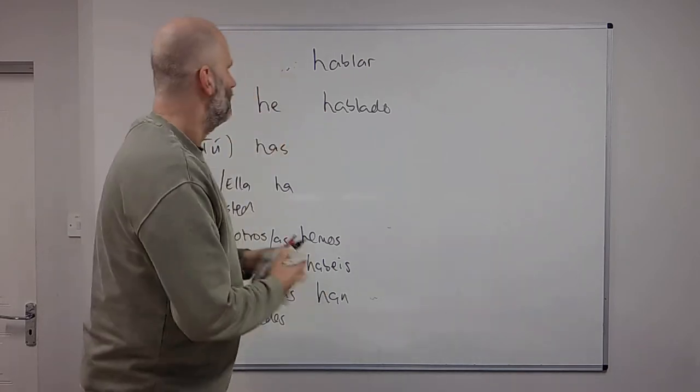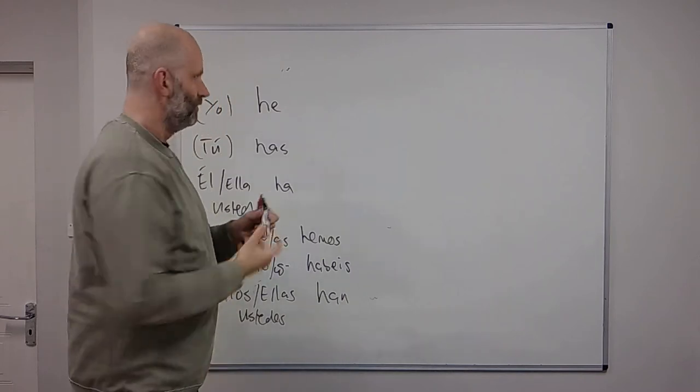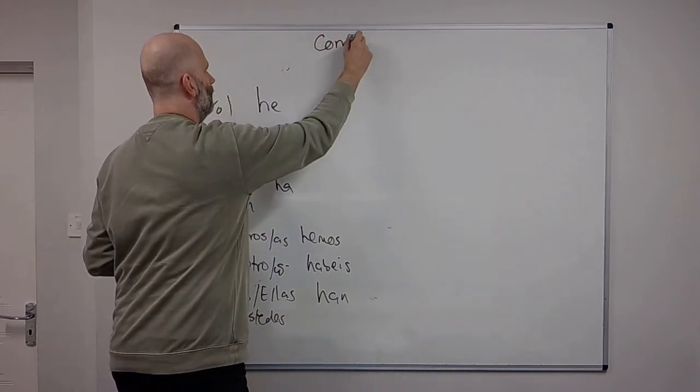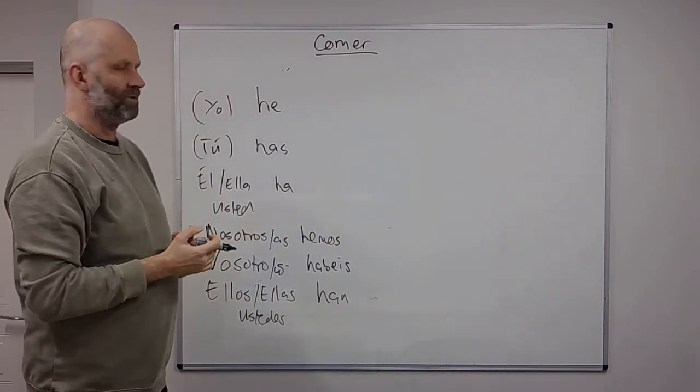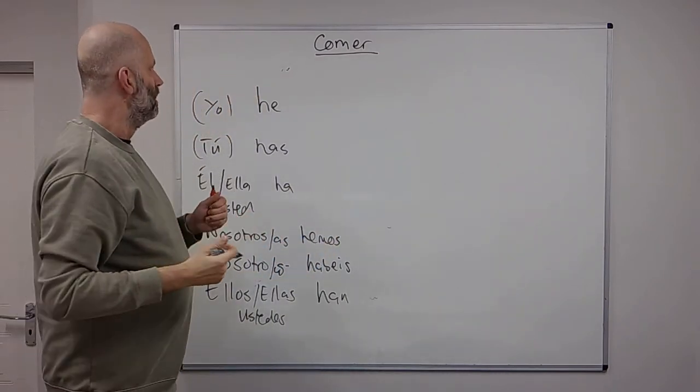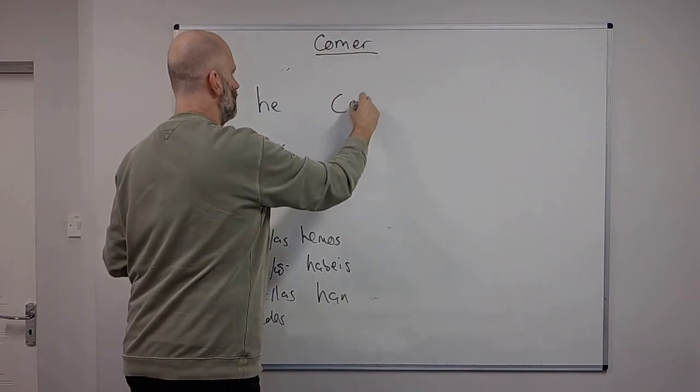So if we look at another verb, an ER verb, comer. So the verb to eat, comer. So if we want to make a past participle, which corresponds to the word eaten, comer becomes past participle comido.